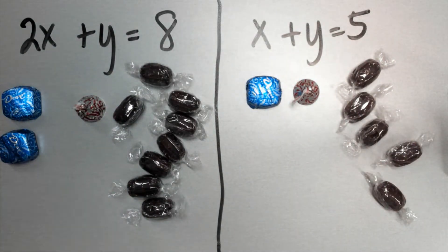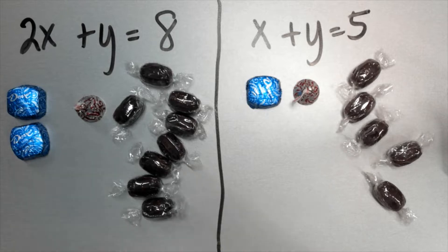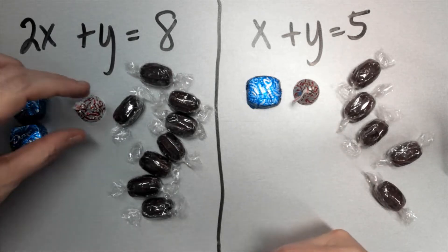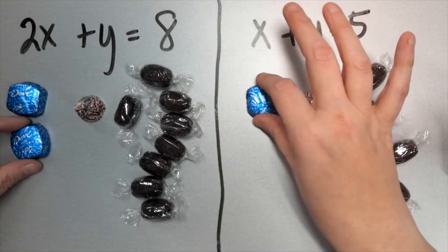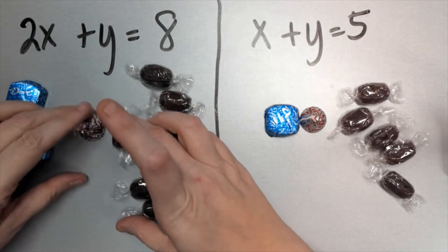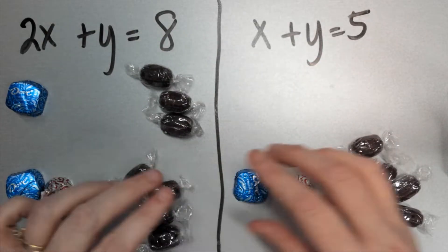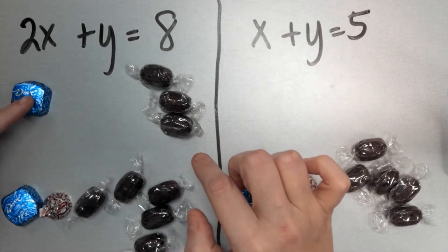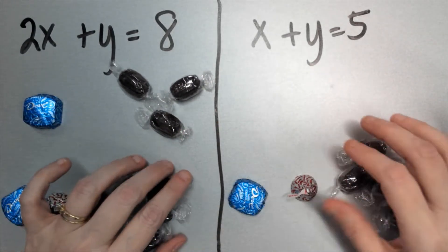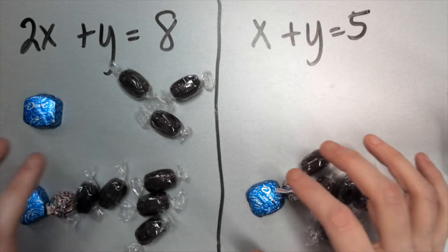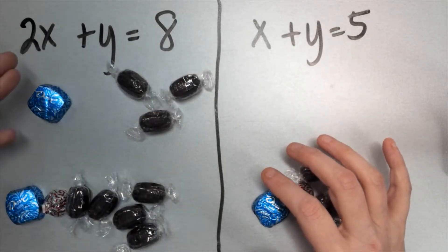This method is really easy but I want you to understand why you're doing it. I know that two X's and a Y equal eight, and one X and a Y equals five. If I regroup, an X, a Y, and five root beer barrels on one side matches the other — they're the same thing. What's left is one X and three root beer barrels, so X equals three.